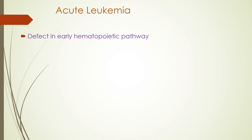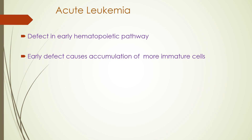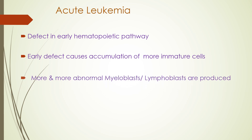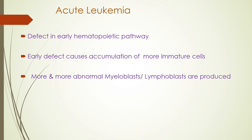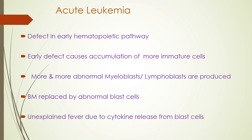There is a genetic defect in the early hematopoietic pathway. An early defect causes accumulation of immature cells because these cells, due to a genetic defect, are not able to mature. More and more abnormal myeloblasts or lymphoblasts are produced. The bone marrow is replaced by abnormal blast cells, with only a few normal cells remaining. These abnormal blast cells also have abnormal function — one function is producing cytokines, which cause unexplained fever.